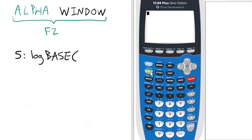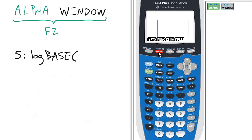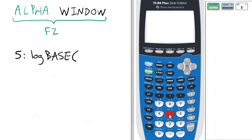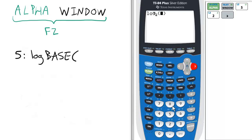For the shortcut to log base, press Alpha and the Window key for the F2 function. From here, select option 5 for log base, and then enter the base. In this case, we'll do log base 2 of 8. To enter the 8, scroll over with the right arrow key and press 8 and Enter. So log base 2 of 8 is 3. I hope it's 3 for you too.